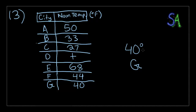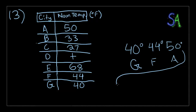Let's pick the bigger temperatures first. There's 44 degrees, which is F. There is 50 degrees, which is A. Then there is 68 degrees, which is E. So there are seven total cities, and there are already three on the large side of the median.